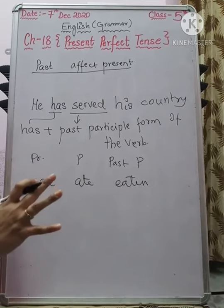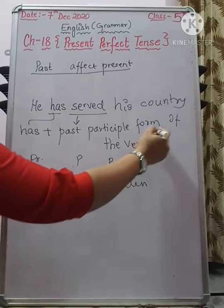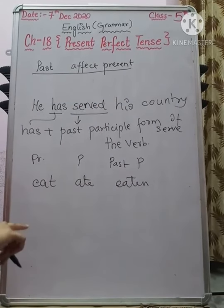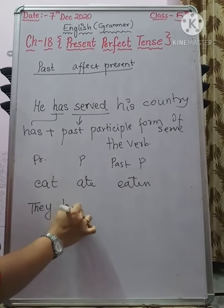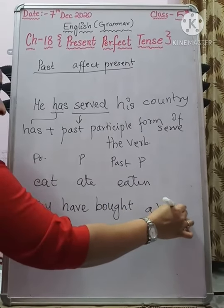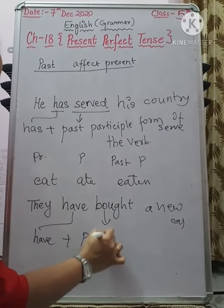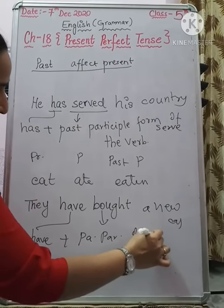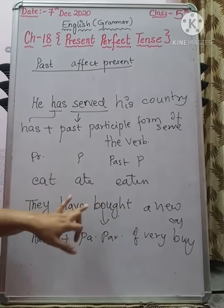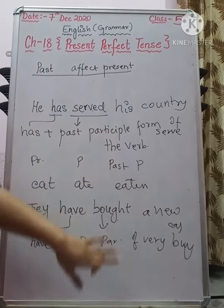When making present perfect tense sentences, 'has' or 'have' will come, and the verb will be in its past participle form. For 'serve', the verb is 'serve' and its past participle form is 'served'. Another example: 'They have bought a new car.' Here 'have' is used, plus the past participle form of the verb 'buy', which is 'bought'. So sentences are formed with has/have plus past participle.